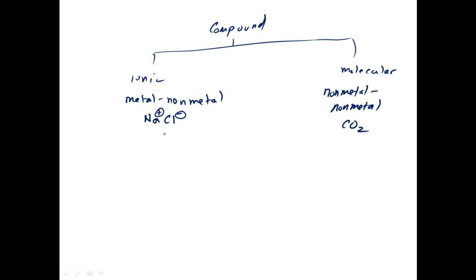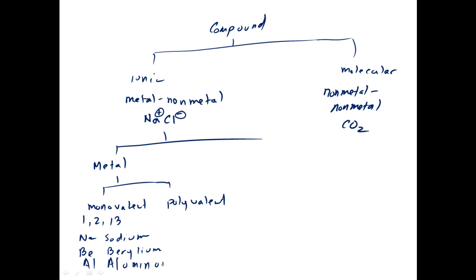Alright, so with ionic compounds the first decision that we have to make is we have to look at the metal. And with the metal you have to decide whether it's monovalent or polyvalent. I talked a little bit about this previously. Monovalent metal ions come out of groups 1, 2 and 13. So like Na out of group 1 which is sodium and out of group 2 would be beryllium. Aluminum. So when you have a compound that has a metal out of group 1, 2 or 13, the metal is just stated by its name. Sodium beryllium or aluminum.